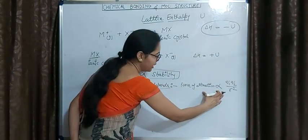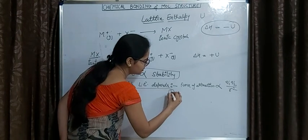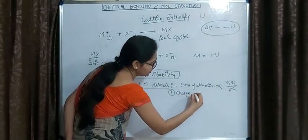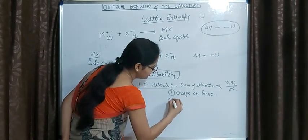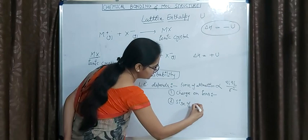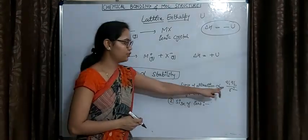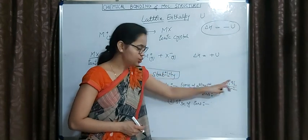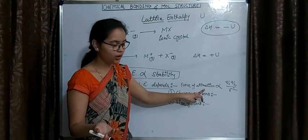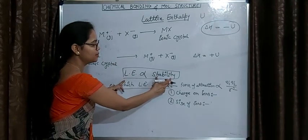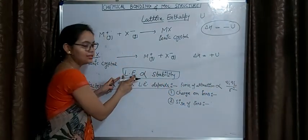Based on Coulomb's law, lattice enthalpy depends on two factors. The first factor is charge on the ion. From the equation, force of attraction is directly proportional to Q1·Q2, so if the charge on the ion is greater, then lattice enthalpy will be higher. Since force of attraction means stability, and stability is directly proportional to lattice enthalpy, higher Q1·Q2 means higher lattice enthalpy.